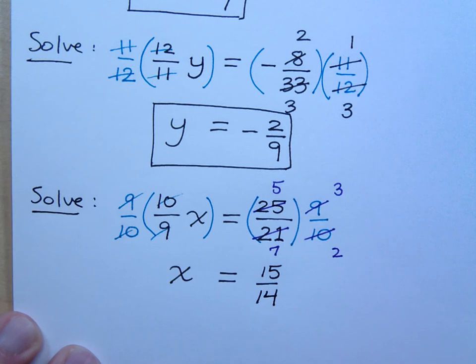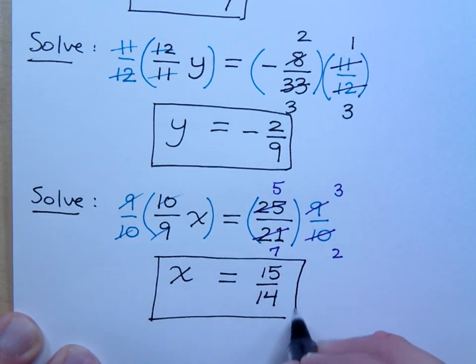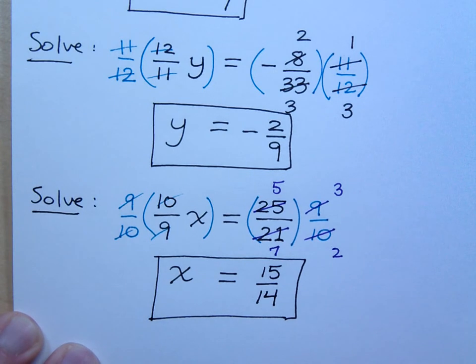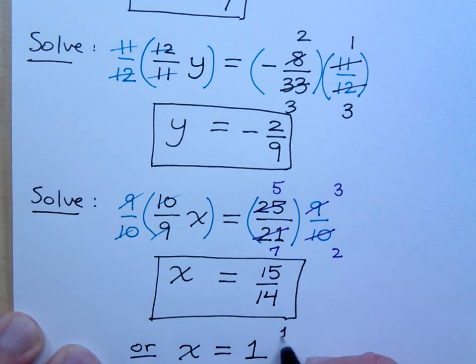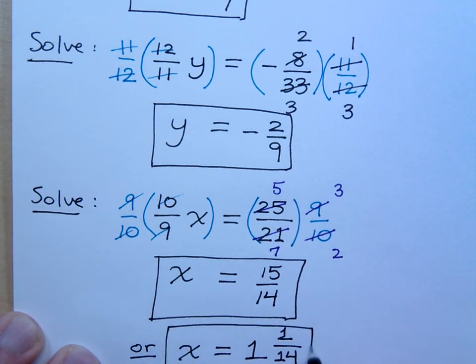I am going to put a box around this, even though it's an improper fraction. You may, if you want to, you may also say that x is equal to what mixed number? 1 and 1 14th. Both of these answers are acceptable.